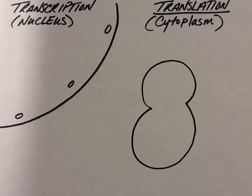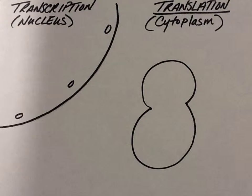Hi guys, this lecture is on protein synthesis. We're going to start out in the nucleus. Transcription occurs in the nucleus, which is a membrane-bound area that contains genetic information in the form of DNA. It also has nuclear pores, which are small holes in the nuclear envelope. We're going to take the information from DNA, make it into mRNA or messenger RNA, and that is going to be translated into amino acids, which will eventually form a very long polypeptide chain of amino acids, which will form a protein.